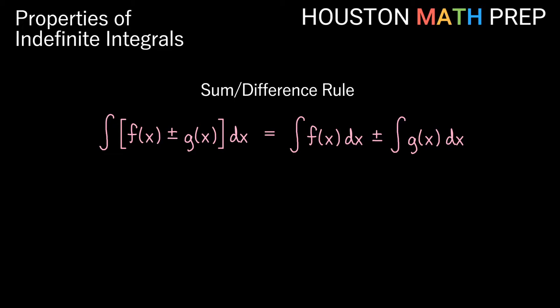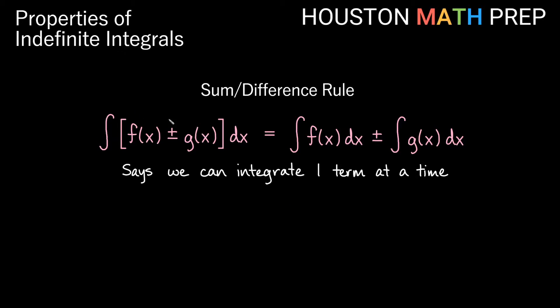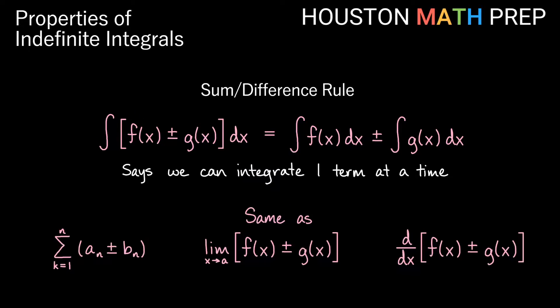You're probably pretty familiar with something like this by now in calculus. This idea basically just says that we can integrate one term at a time if we have the antiderivative of a term plus or minus another term, even if we have a bunch of terms. This is similar to how we evaluate sums, limits, and derivatives one term at a time.